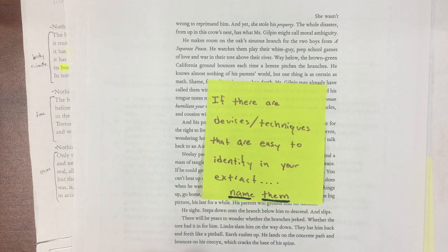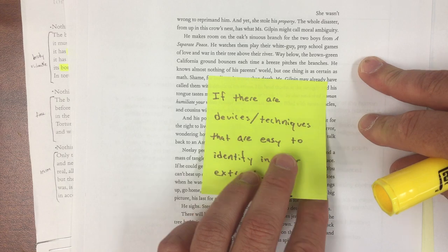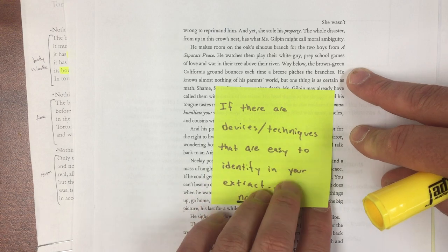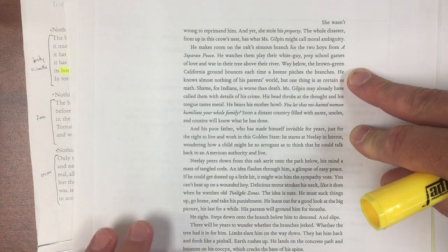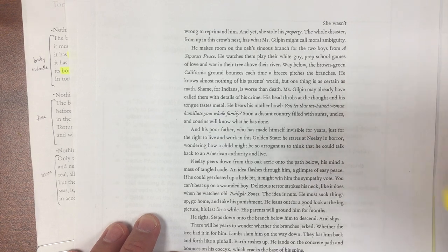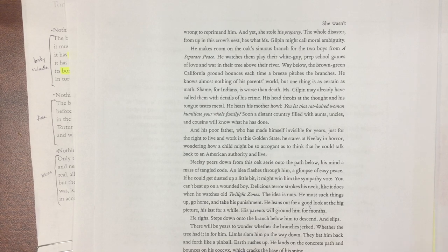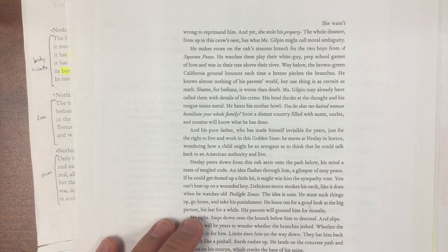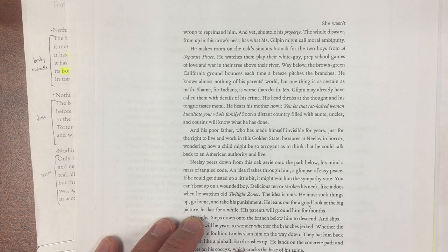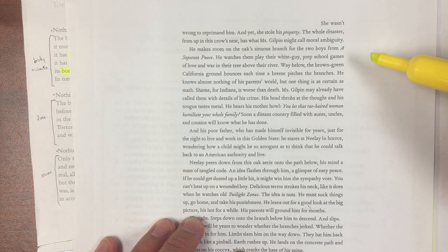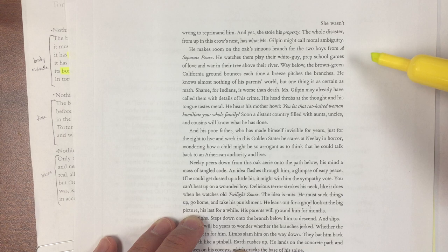Like if I was an assessor and what you had the extract, let's say, for this purpose, it doesn't really matter what the global issue is. But let's just say that this is the extract from The Overstory. She wasn't wrong to reprimand him, and yet she stole his property. The whole disaster from up in this crow's nest has what Ms. Gilpin might call moral ambiguity. He makes room on the oak's sinuous branch for the two boys from a separate piece. He watches them play their white guy prep school games of love and war in their tree above the river.